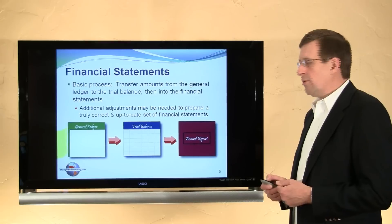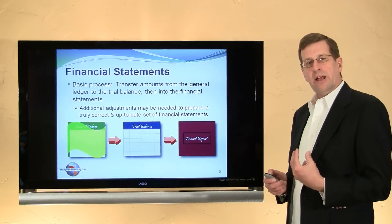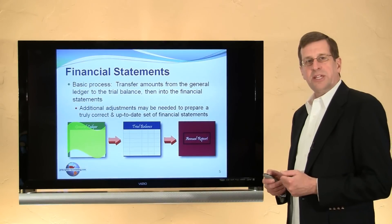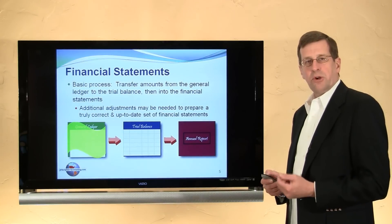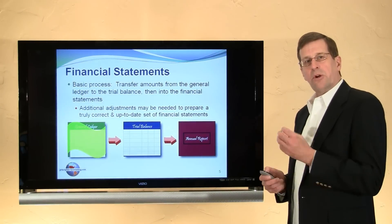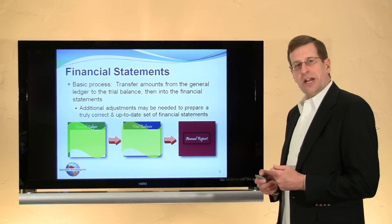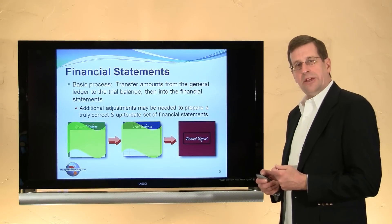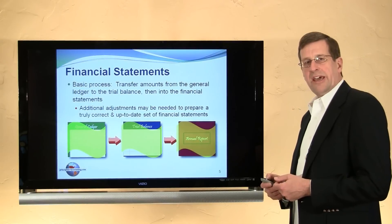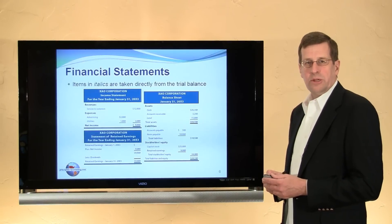Reviewing: we have the general ledger, and remember the amounts in the general ledger are the result of posting from a general journal. The transactions and events are posted from the journal into the ledger. The balances in the general ledger are then used to prepare the trial balance, and the trial balance is the takeoff point for preparing financial statements or reports.